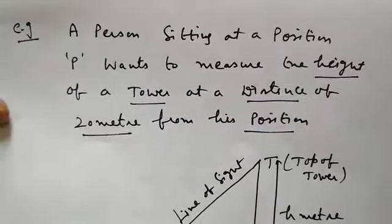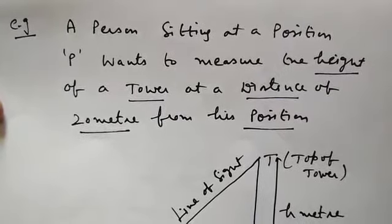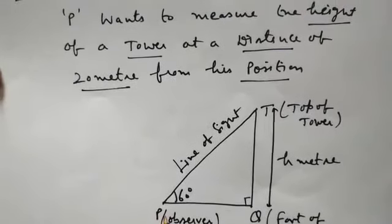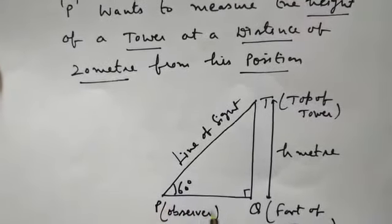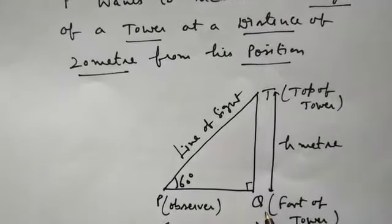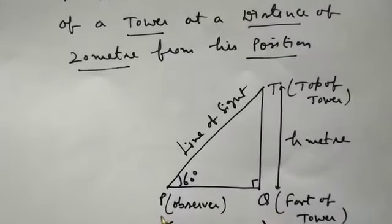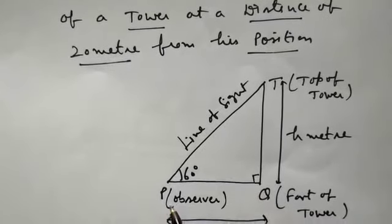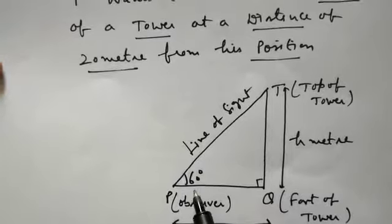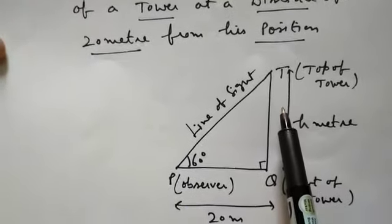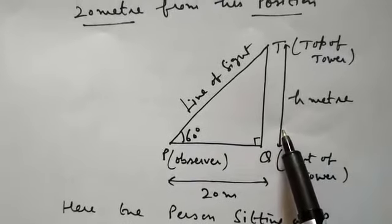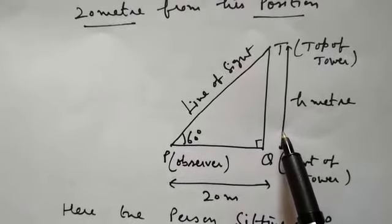Let's take one example. A person sitting at a position P wants to measure the height of a tower. T is the top of the tower and Q is the foot of the tower. The person is sitting at P, at a distance of 20 meters from the foot of the tower, and wants to find the height of the tower without properly measuring it. We will see how Trigonometric ratios are helpful here.